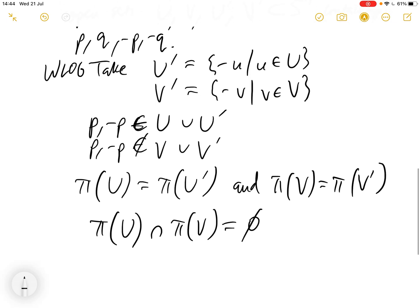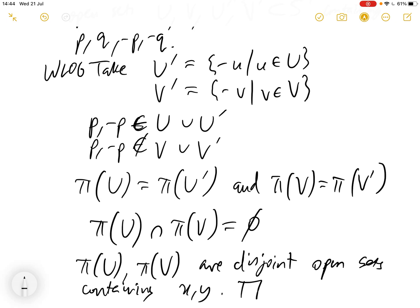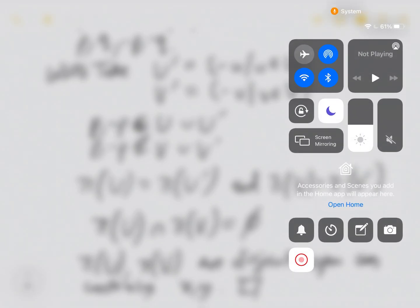So, yeah, so we're done. So we've proven, so we can say pi of U and pi of V are disjoint open sets containing X and Y. So we're done. RPn must be Hausdorff. Thank you.